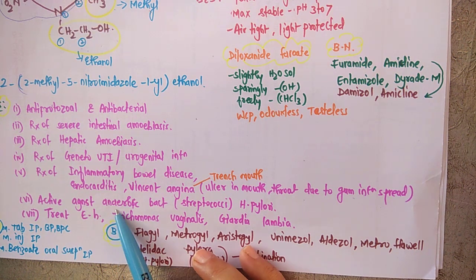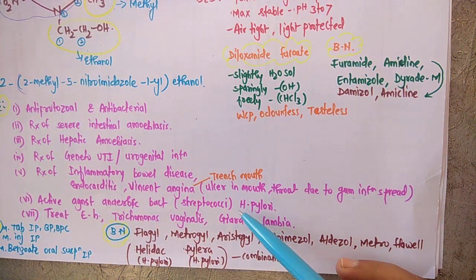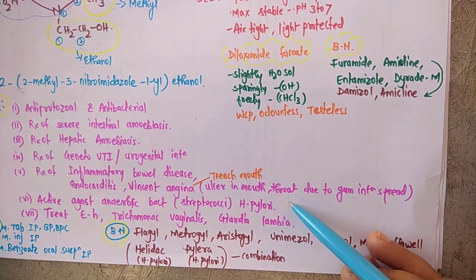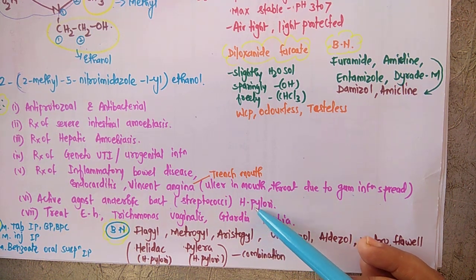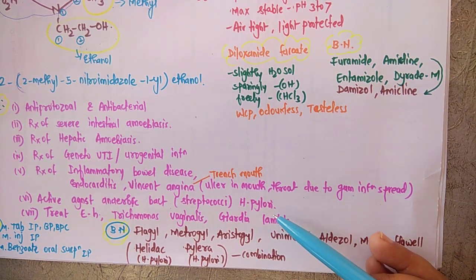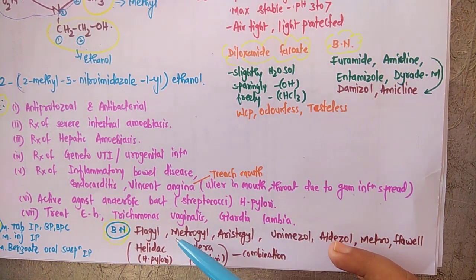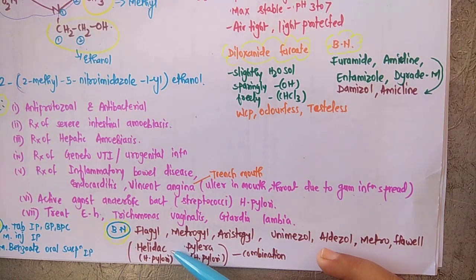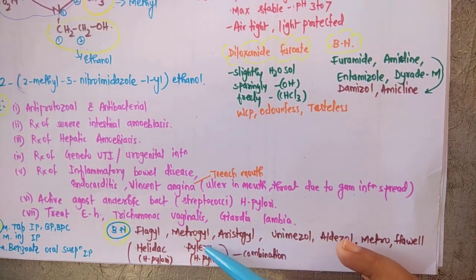It is also active against anaerobic bacteria such as streptococci and H. pylori. Since they are also active against H. pylori, there are combination drugs in the market available, which are under the brand Helidac and Pylera, for the treatment of H. pylori infections.